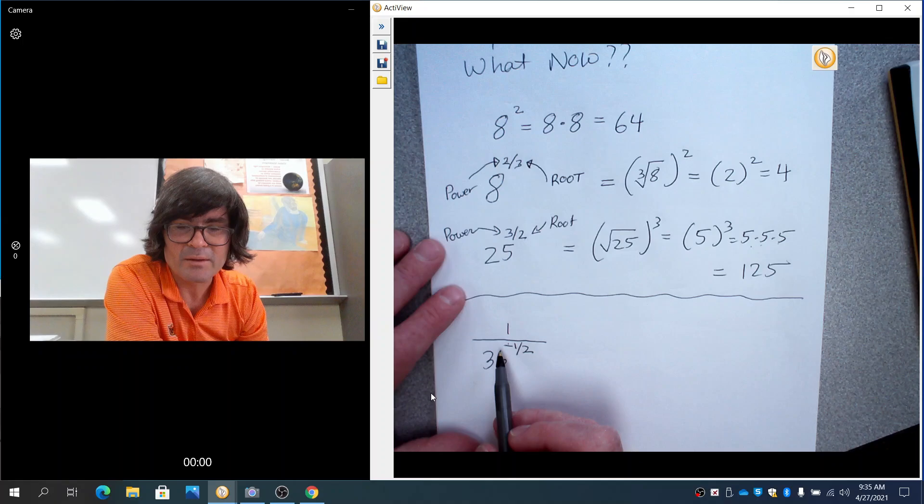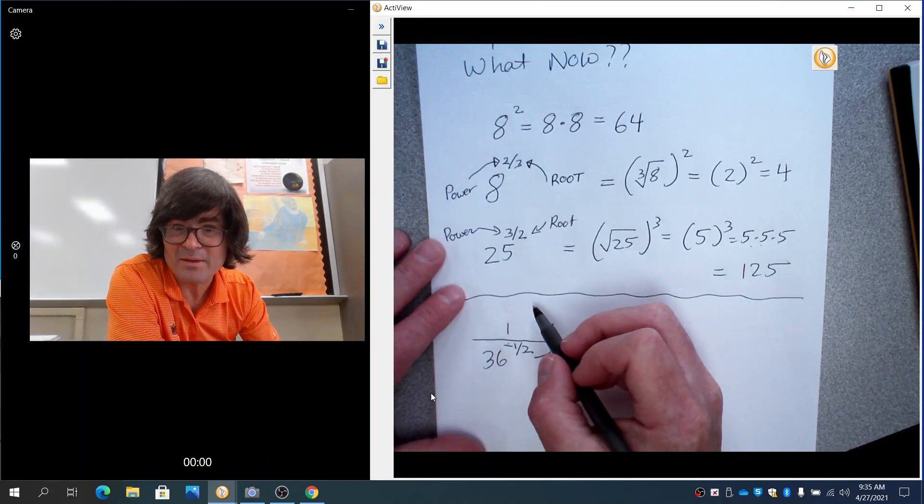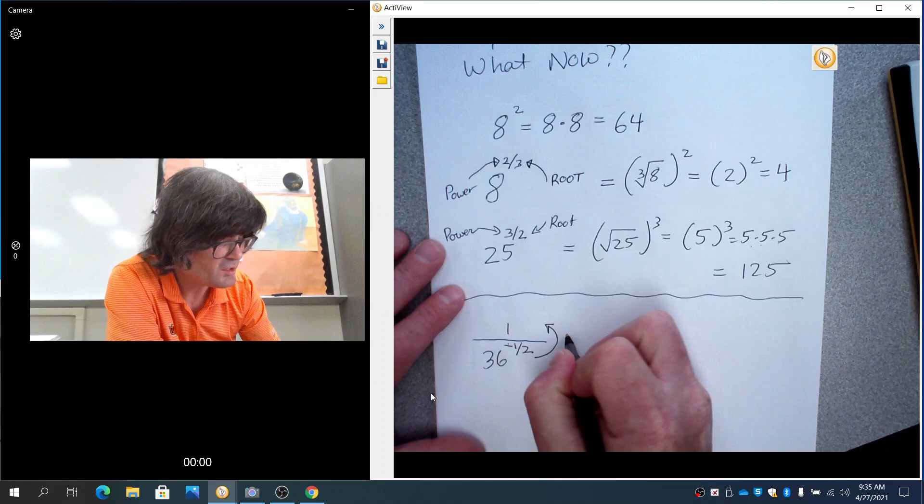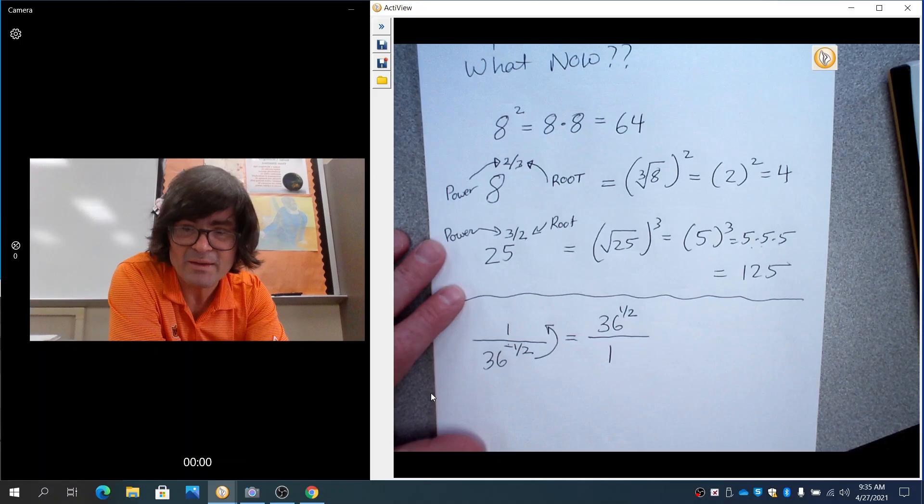Also recall from an earlier video that I made: a negative means that you flip whatever's on the bottom up to the top, or if it happened to be on the top, you'd bring it down to the bottom. So this is really, before you get rolling, going to be 36 to the 1 half, and then we just have a 1 down there.